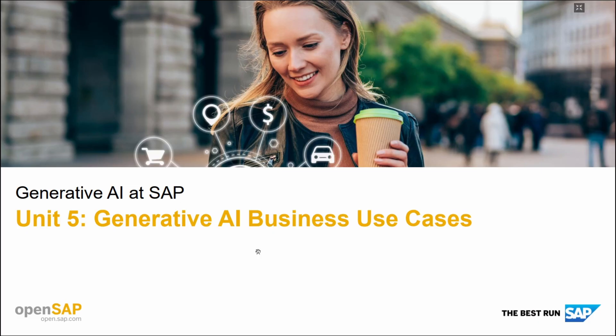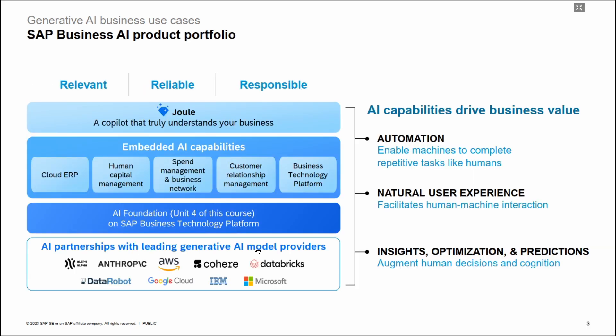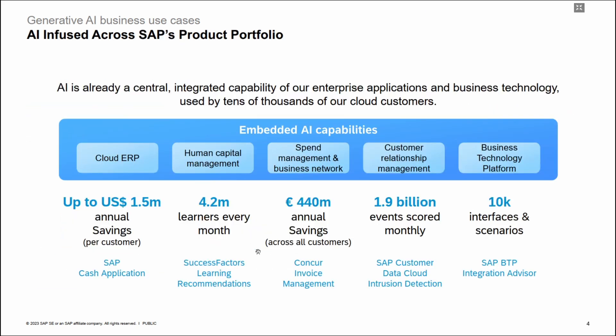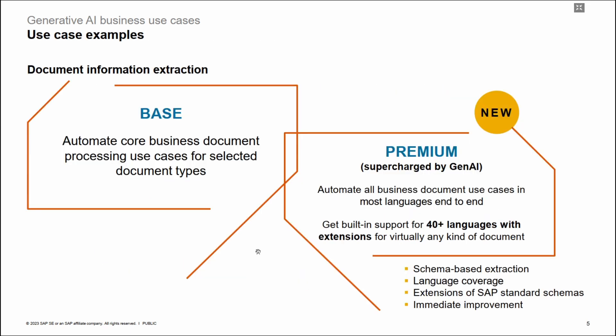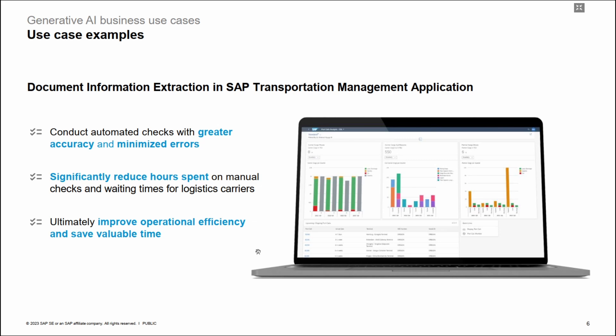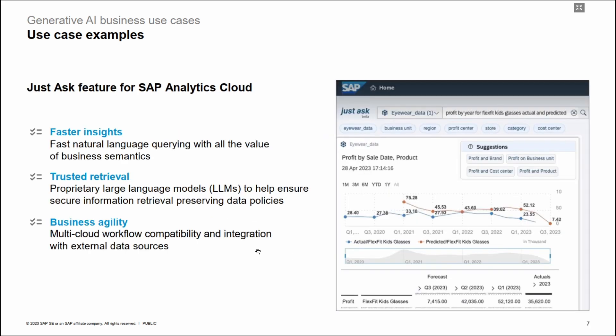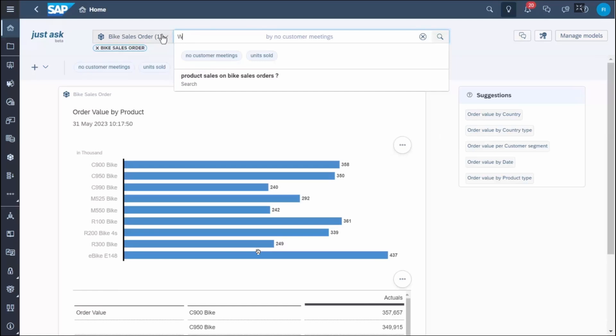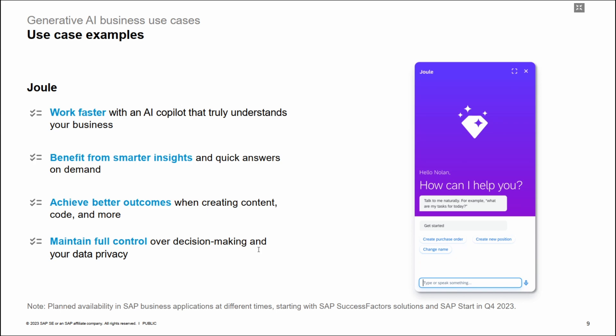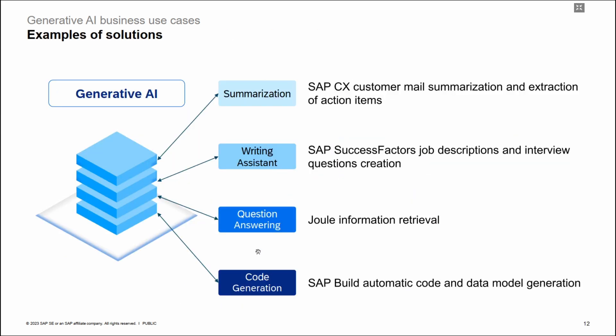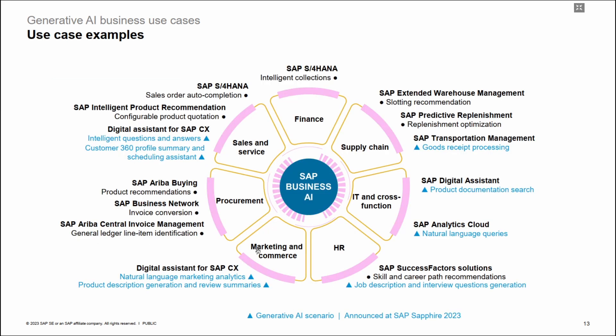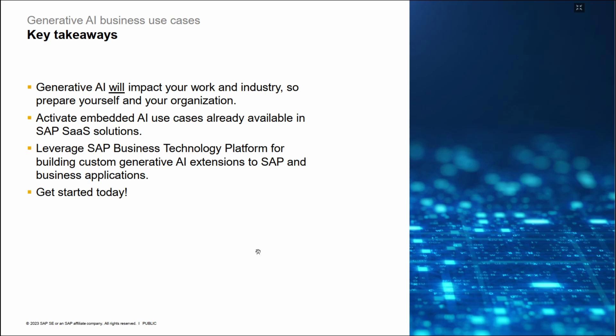Unit 5 — Generative AI Business Use Cases — delves into the SAP Business AI product portfolio, providing participants with an overview of SAP's offerings in the AI domain. Learners will explore various generative AI business use cases, gaining insights into how these technologies are applied to solve real-world challenges within organizations. The unit concludes with key takeaways consolidating the essential learnings from the course and emphasizing the practical applications and benefits of generative AI within business contexts.